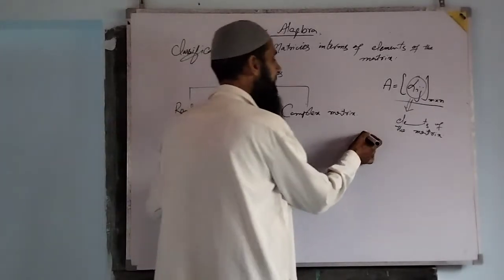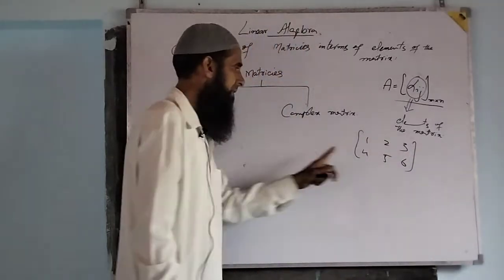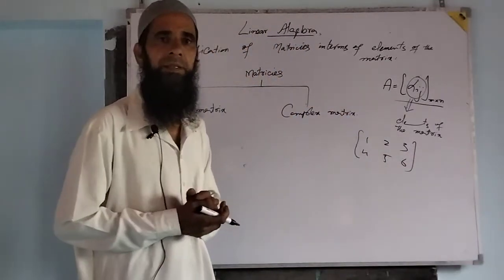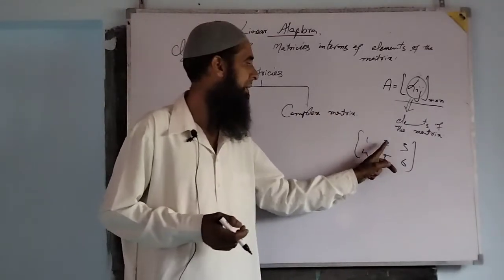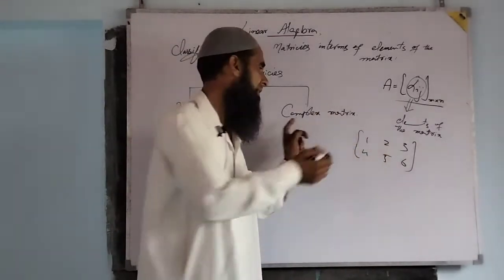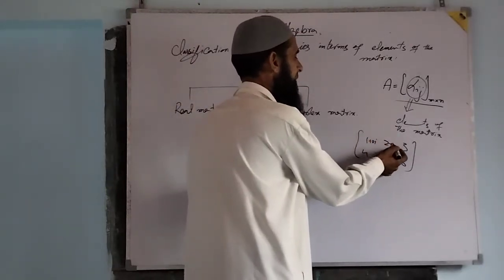For example, if we have a real matrix [1, 2, 3, 4, 5, 6], this is a real matrix. It is also a complex matrix because one is also a complex number, two is also a complex number. As one can be written as one plus zero iota, two plus zero iota, and so on.